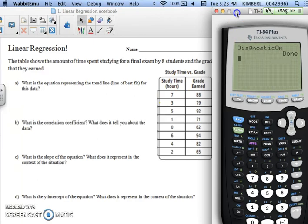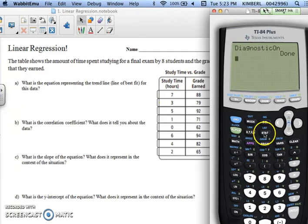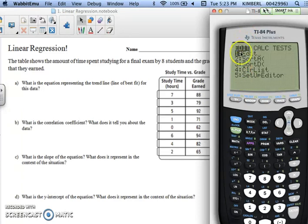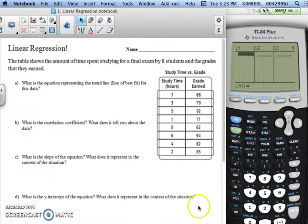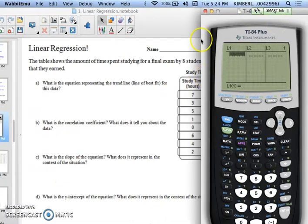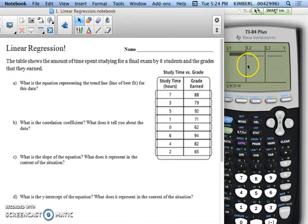Alright, so for linear regression you're always going to go to the stat button. In this stat button you can choose to edit tables, which is what we're about to do. You're going to hit edit first. L1 stands for list one, and L2 stands for the other list. You're going to type the X column into the list one column, and then the Y column into the L2 column.